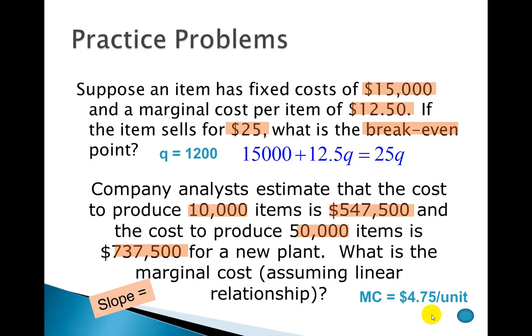So if I graph this, it would be a line, and it would have a slope of 4.75. Okay, just remember that it's the change in cost. So that's 737,500 minus the 547,500, and then over 50,000 minus 10,000. And then just calculate that out.